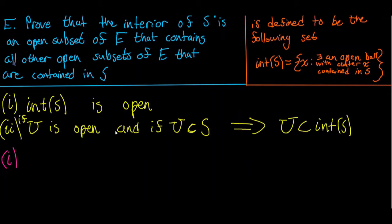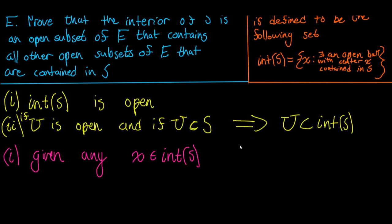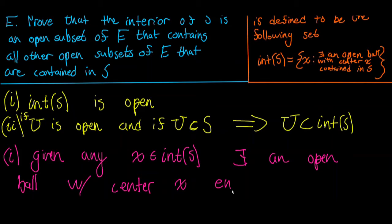Let's prove part one first — that the interior of S is open. How do we prove that a set is open? By the definition of an open set, a set is open if, given any point in that set, there exists an open ball centered at that point entirely contained in that set. So we have to show that given any X in the interior of S, there exists an open ball with center X entirely contained in the interior of S.